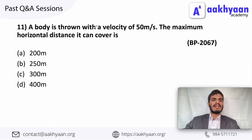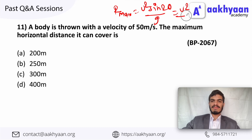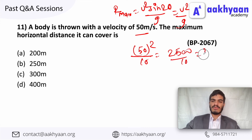In the next problem, a body is thrown with a velocity of 50 meters per second. The maximum horizontal distance it can cover: the maximum range equals u squared divided by g. With u equal to 50 meters per second, u squared divided by g equals 2500 divided by 10 equals 250 meters. This is the correct option.